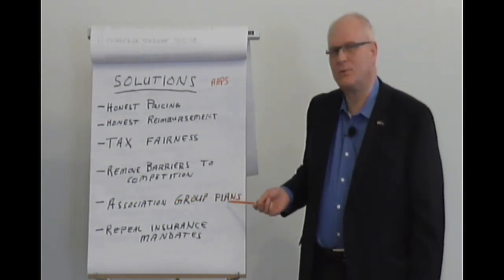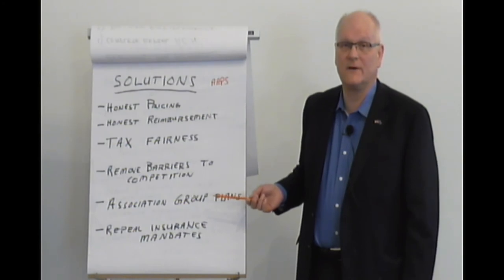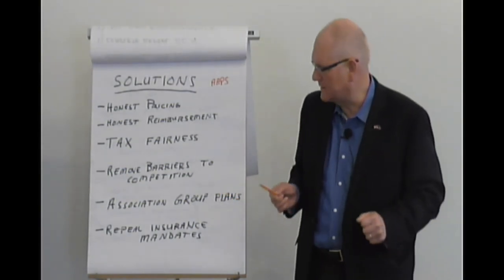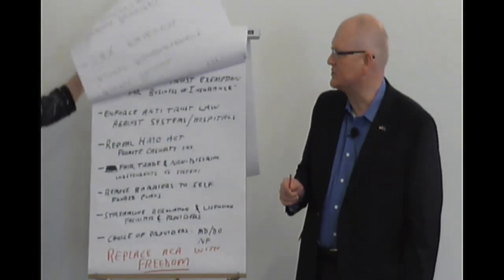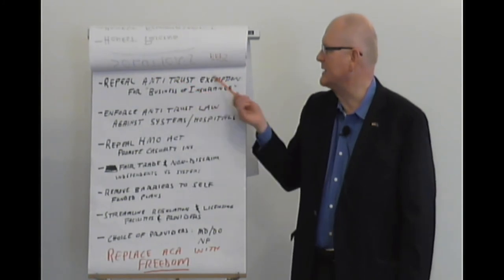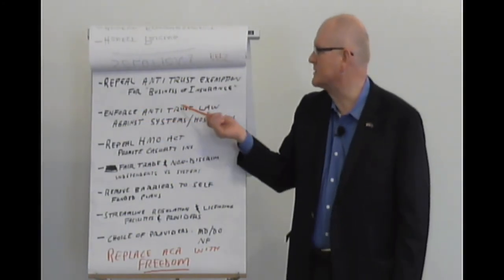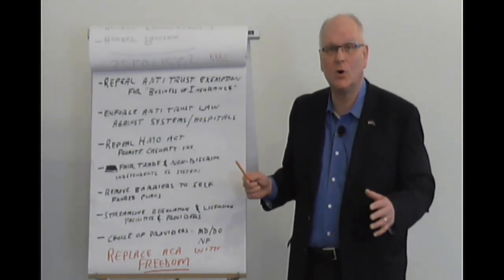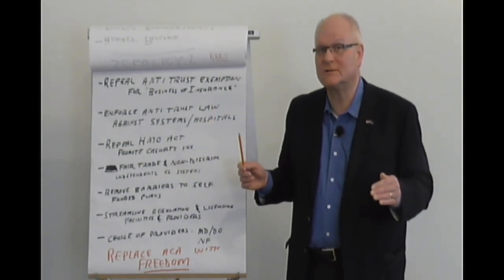We need association group plans, health-sharing groups. And again, I'll refer you to Rand Paul's bill for a summary of these types of novel insurances, which will cover more people, and then Nancy Pelosi can go to sleep at night comfortably. We need to repeal the insurance mandates. All of them, gone. Insurance is custom. Now here's where it gets a little bit arcane. But we need to repeal the antitrust exemption for the business of insurance. It's really in the weeds, but trust me, it's important. We need to enforce the antitrust law against systems and hospitals. What's happening slowly is these big corporations are starting to form big shares of the market, and at some point it's going to be just like the old-fashioned trusts that need to be busted up now.